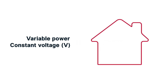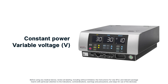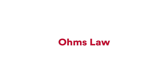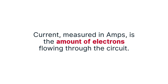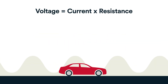At home, common electric appliances run on variable power and constant voltage. However, standard electrosurgical generators generally deliver constant power and variable voltage to provide controlled tissue effects. Ohm's law defines the basic relationship of the generator's voltage to current and tissue resistance: voltage equals current times resistance. Current, measured in amps, is the amount of electrons flowing through the circuit.